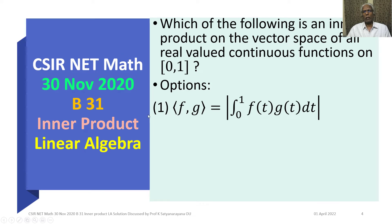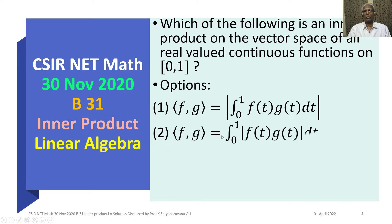Option 1: ⟨f, g⟩ is equal to the modulus of the integral from 0 to 1 of f(t)·g(t) dt. Option 2: ⟨f, g⟩ is equal to the integral from 0 to 1 of |f(t)·g(t)| dt.